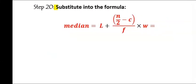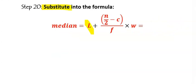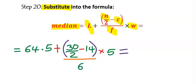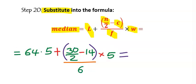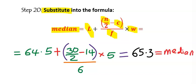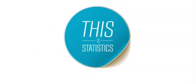Substitute into the formula: Median = 64.5 + [(15.5 − 14) / 6] × 5. Compute the bracket first, then divide, then multiply, and finally add. The result is 65.3, which is the median.